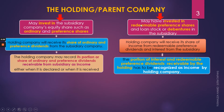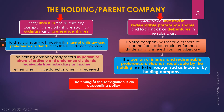The holding or parent company may have invested in redeemable preference shares and may also have invested in the loan stock or the debentures in the subsidiary company. As such, the holding company will receive its share of income from redeemable preference dividends if the subsidiary company declared the dividend, and also will have some share of debenture interest from the subsidiary company should the interests be provided for. The portion of the interest and redeemable preference dividend receivable by the holding company, similar to the ordinary and preference dividend, has to be recognized as income by the holding company. The timing of recognition of this share of dividends or share of interest is an accounting policy.